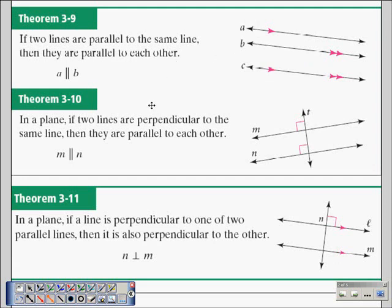The second theorem today, in a plane, if two lines are perpendicular to the same line, then they are parallel to each other. So if we have two lines crossed by a transversal and the transversal is perpendicular to both lines, then we can conclude that the two lines are parallel to each other.